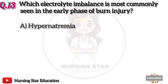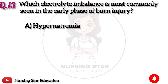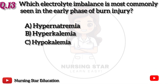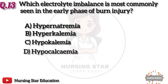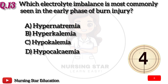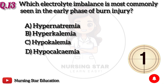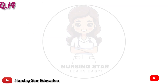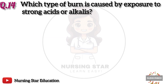Question 13: Which electrolyte imbalance is most commonly seen in the early phase of burn injury? Option A: Hypernatremia. B: Hyperkalemia. C: Hypokalemia. D: Hypocalcemia. The correct answer is B: Hyperkalemia.